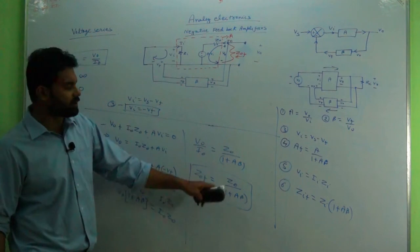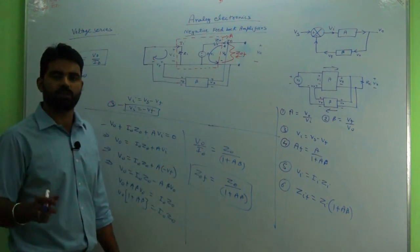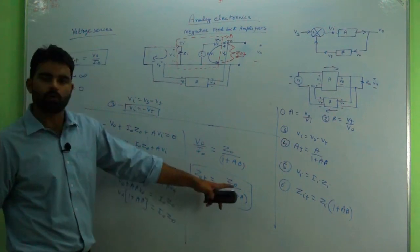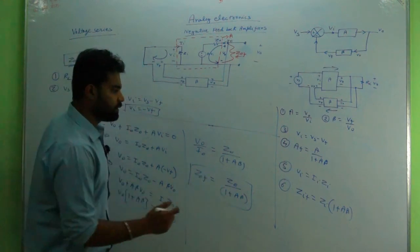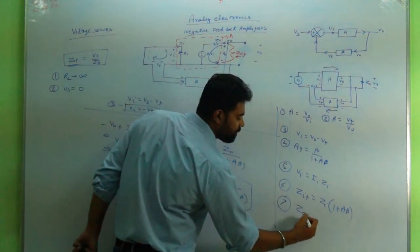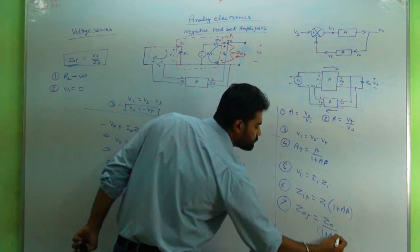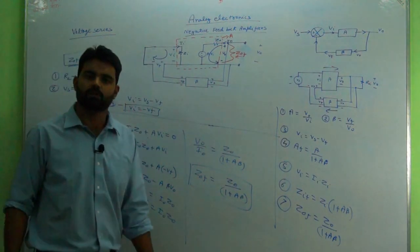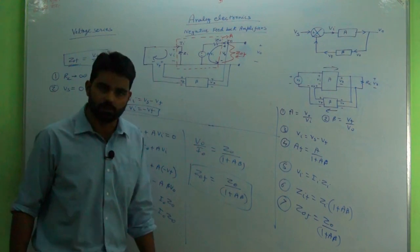Thus it has been established by mathematical logic that ZOF is equal to ZO upon 1 plus A beta - that is the output impedance for voltage series feedback. Output impedance reduces, that is ZO upon 1 plus A beta. We'll deal with voltage shunt in the next episode. Thank you, consider subscribing if you are new to the channel.